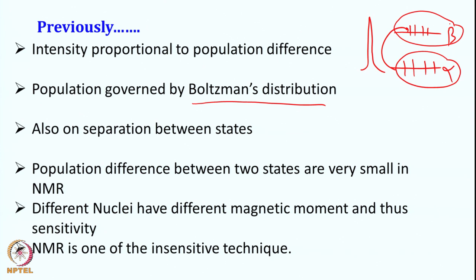Since the separation between these states is minimal — in NMR, the difference between the ground state and the excited state is not much — therefore NMR is one of the insensitive techniques. As we said, the difference between the populations here and here is not much, and therefore intensity, meaning signal, is low.